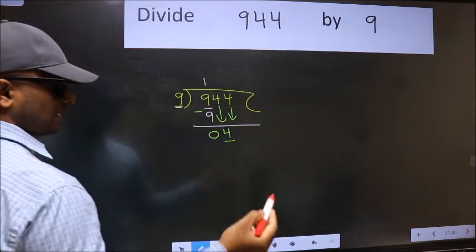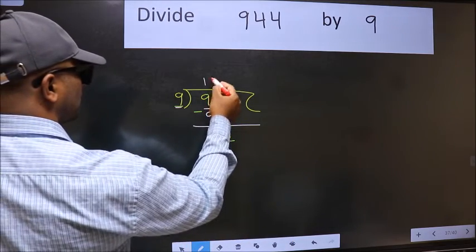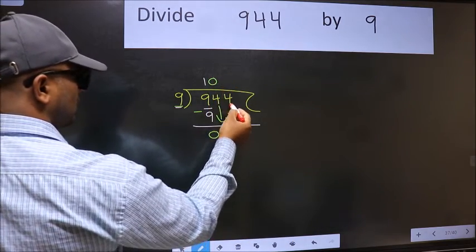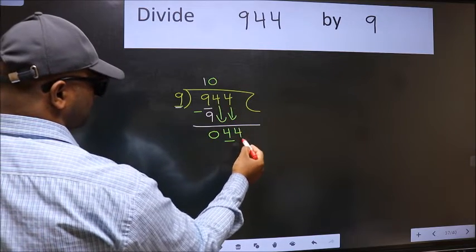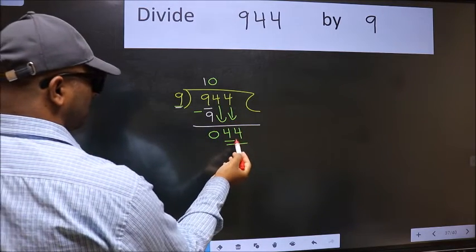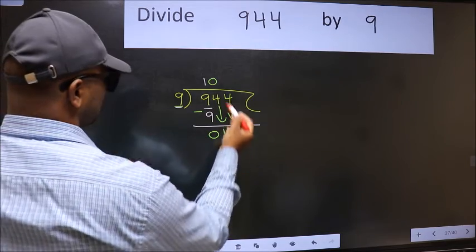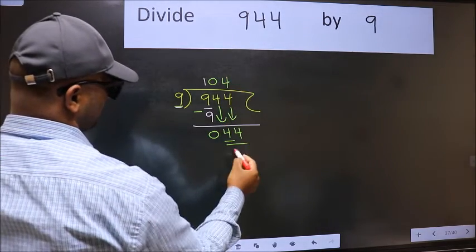And the rule to bring down second number is we should put 0 here. Then only we can bring this number down. Now 44. A number close to 44 in 9 table is 9 fours 36.